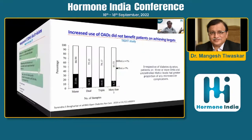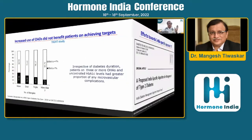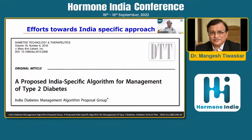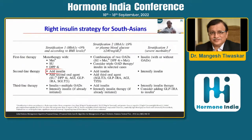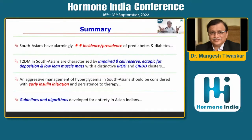We as Indian practitioners have a tendency to intensify oral therapies much more than insulin therapies. A paper by Dr. Borgharkar showed that no matter how much you increase oral antidiabetic drugs, glycemic control targets will never be achieved. Dr. Anupama's paper demonstrated that the Indian population will require insulin much earlier in the management of type 2 diabetes.